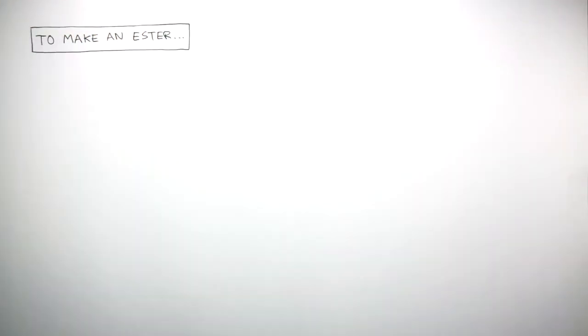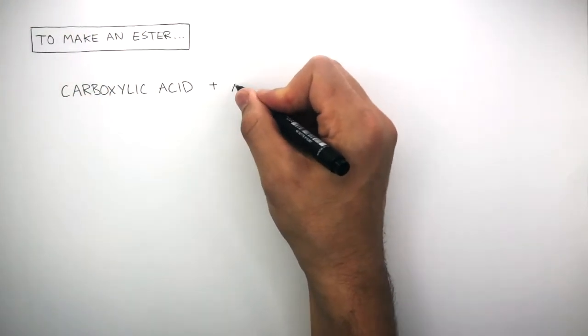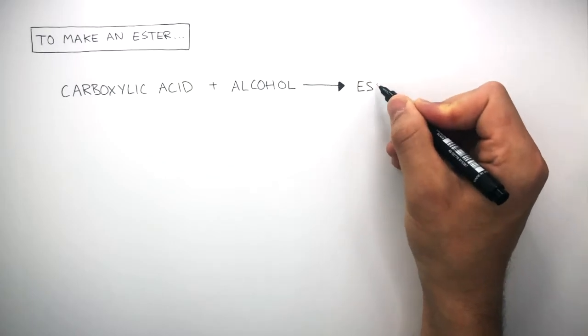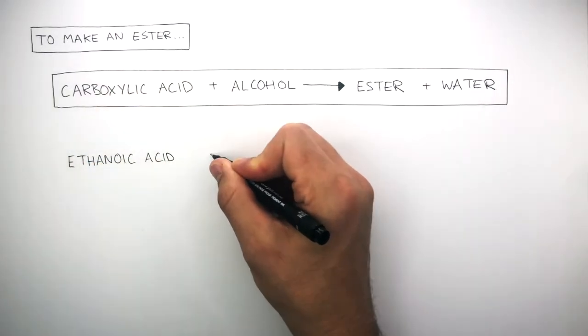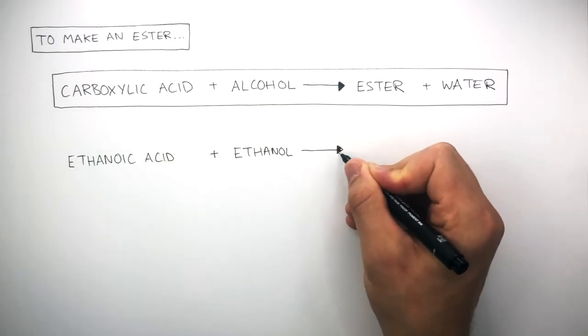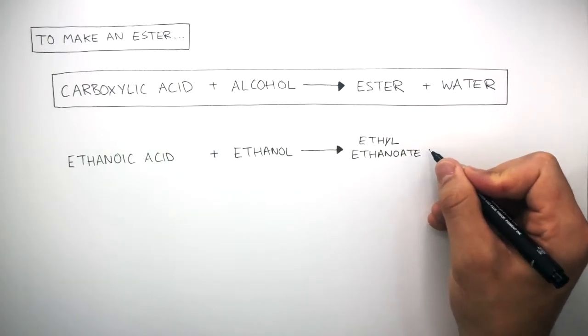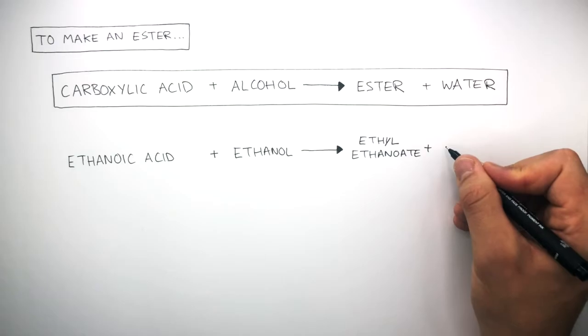To make an ester, a carboxylic acid is reacted with an alcohol to make an ester and water. For example, when ethanoic acid reacts with ethanol, ethyl ethanoate is formed and so is a small molecule of water.